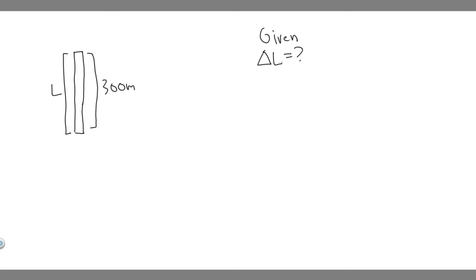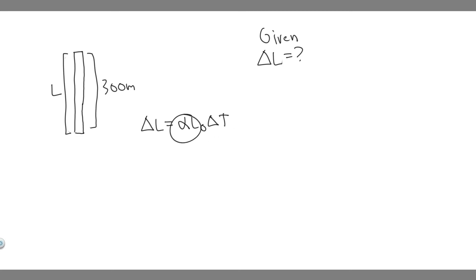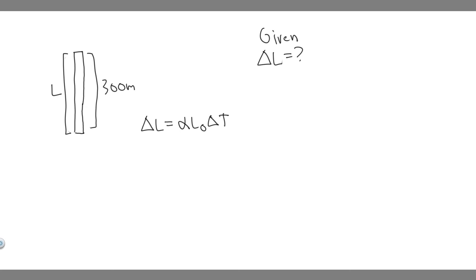The way we're going to do it is by using this formula: delta L is equal to alpha times L sub zero, or the initial length, times delta T. Alpha is just going to be the coefficient of linear expansion. This formula is just a thermal expansion formula, because when things heat up they're going to expand.